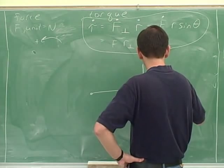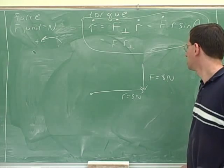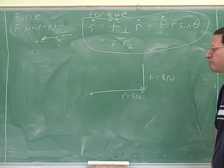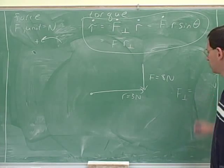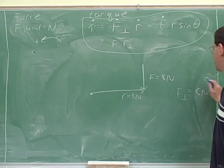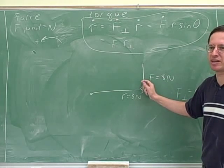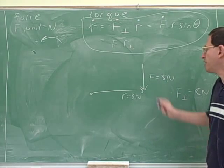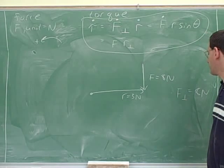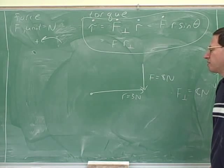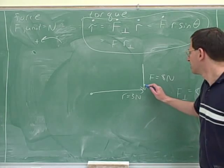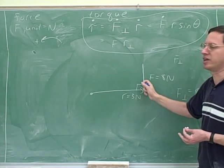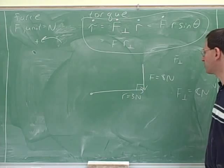What would the torque be from this force? That would be 24. What is the length of F perpendicular here? In this case, the whole force is already perpendicular to R, so the component perpendicular to R is simply the entire vector — you don't need to break it into components. When the force is already perpendicular to R, either method works fine. If you know it's a right angle, the F perpendicular method is probably better.